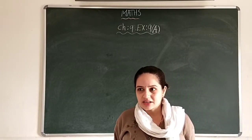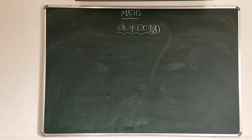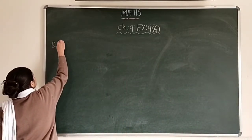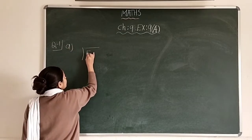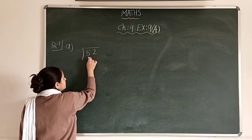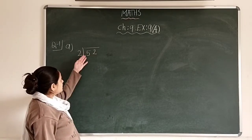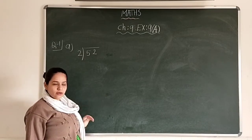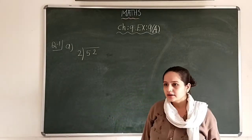So we shall start with exercise number 9A. Question number 1A of the exercise is 52 divided by 10. Here we have been given a 2-digit dividend number to divide by a single digit, in which the remainder will be a number other than 0.